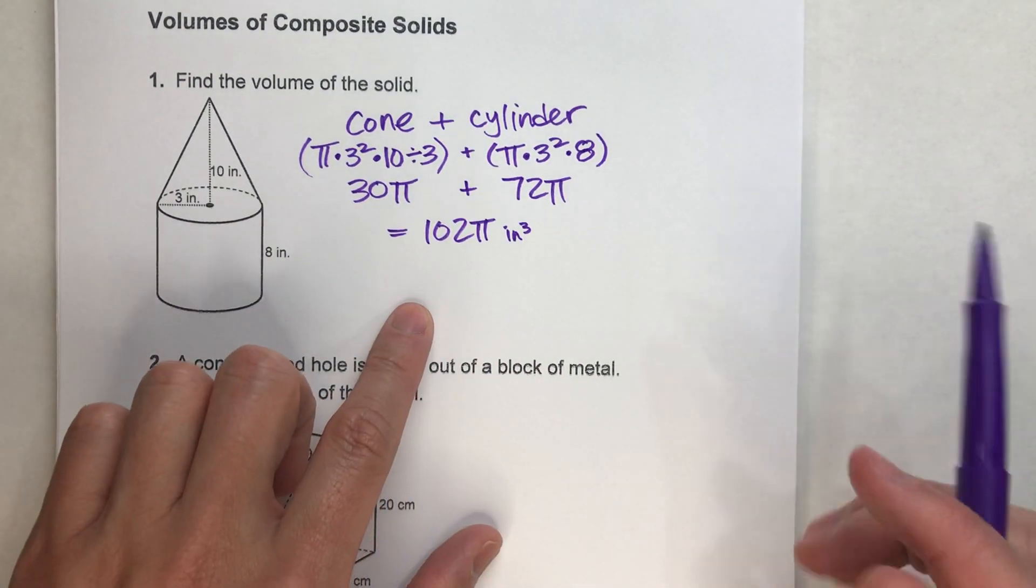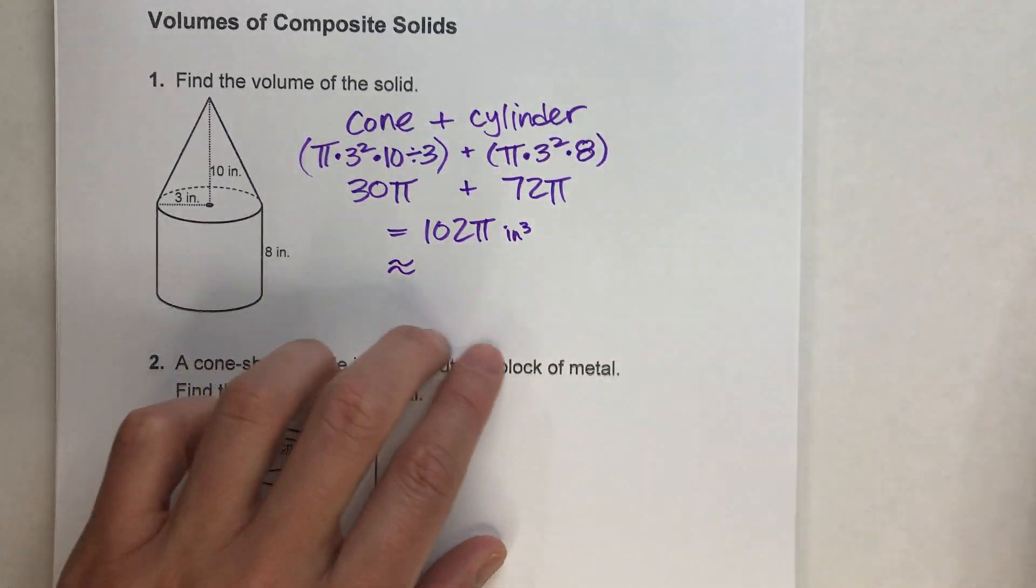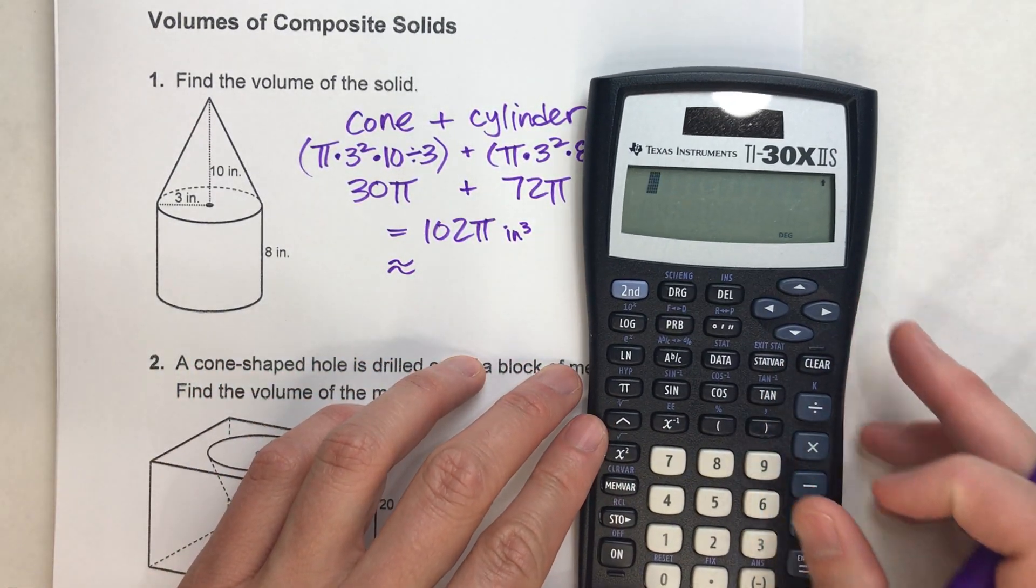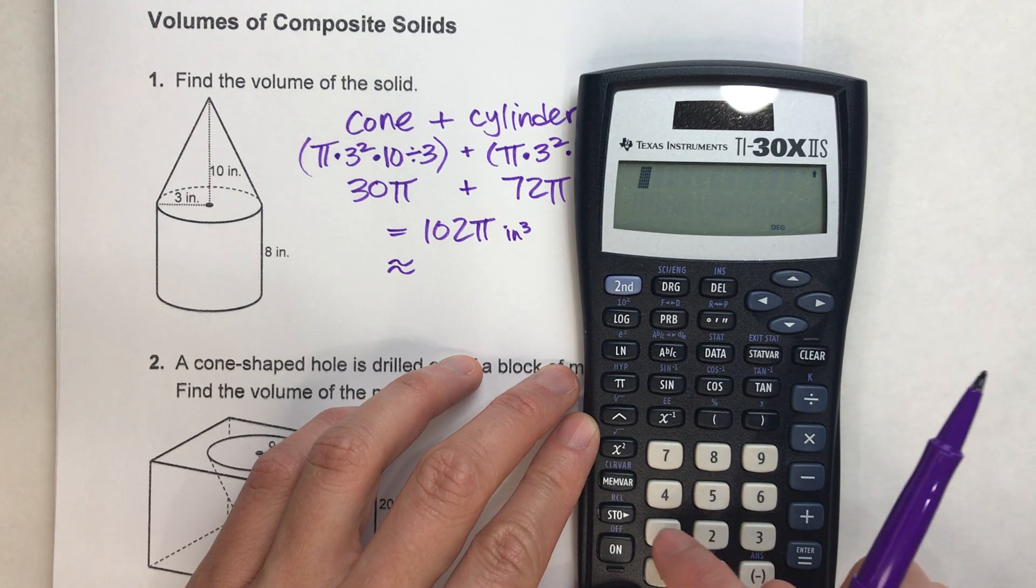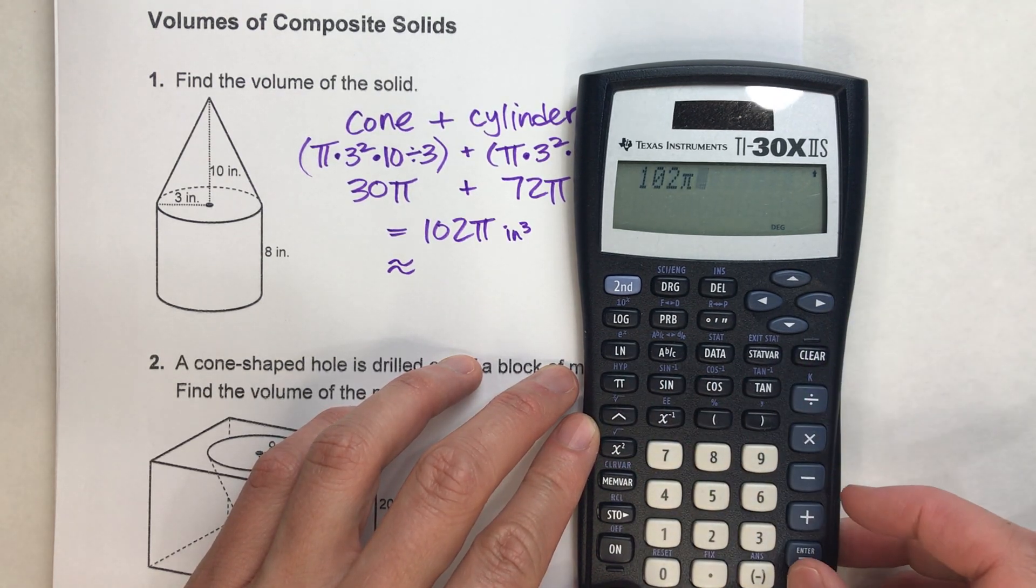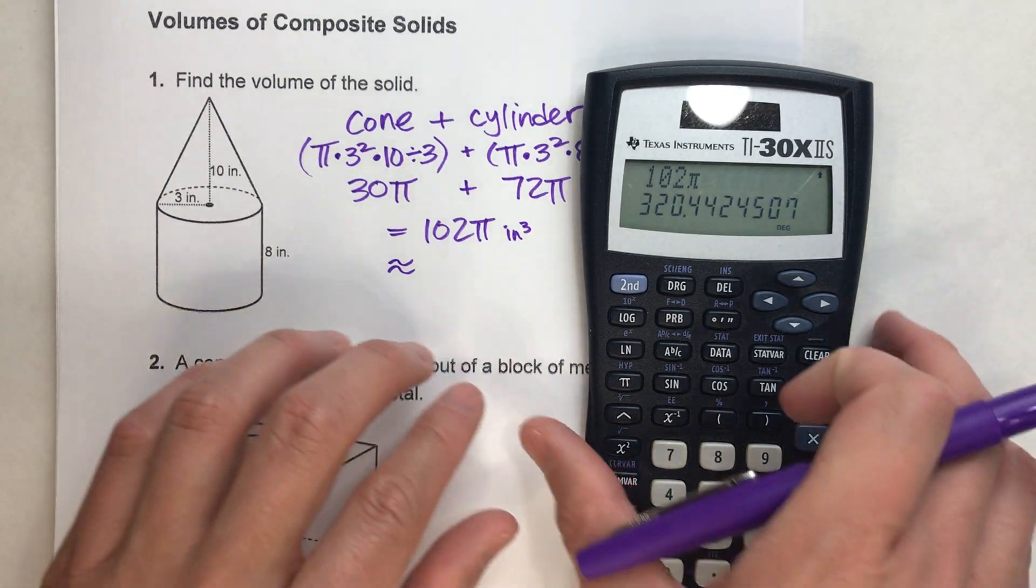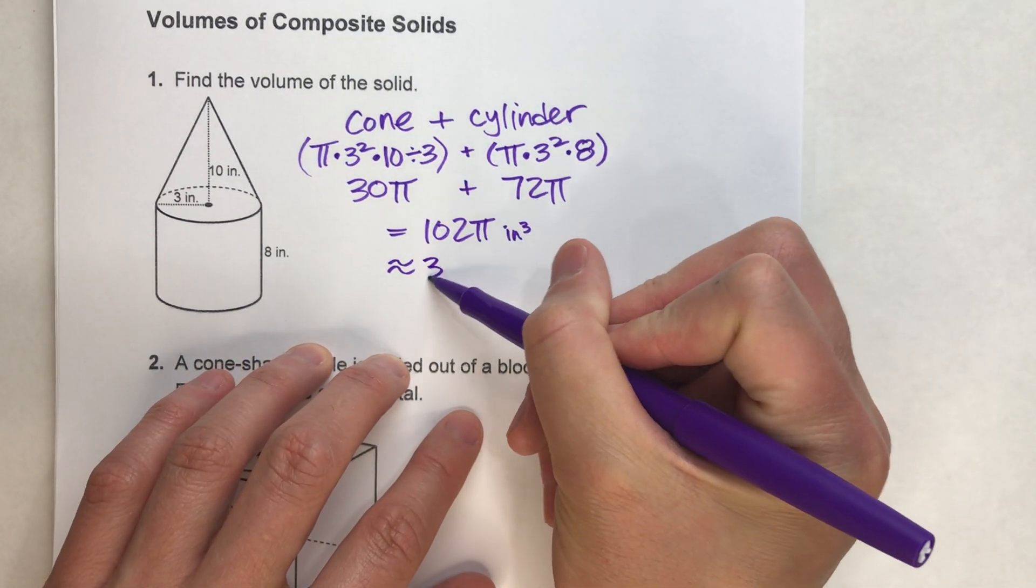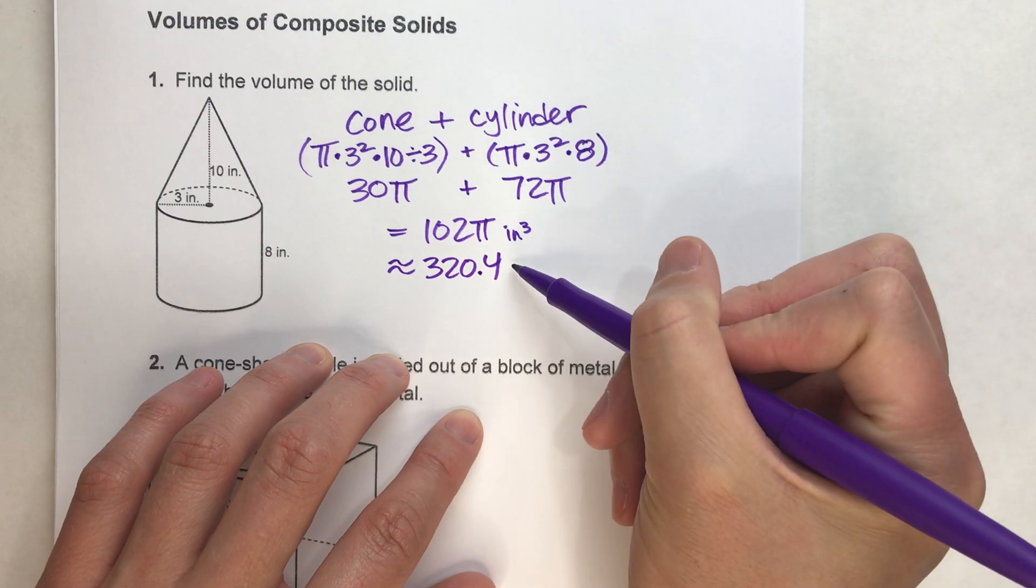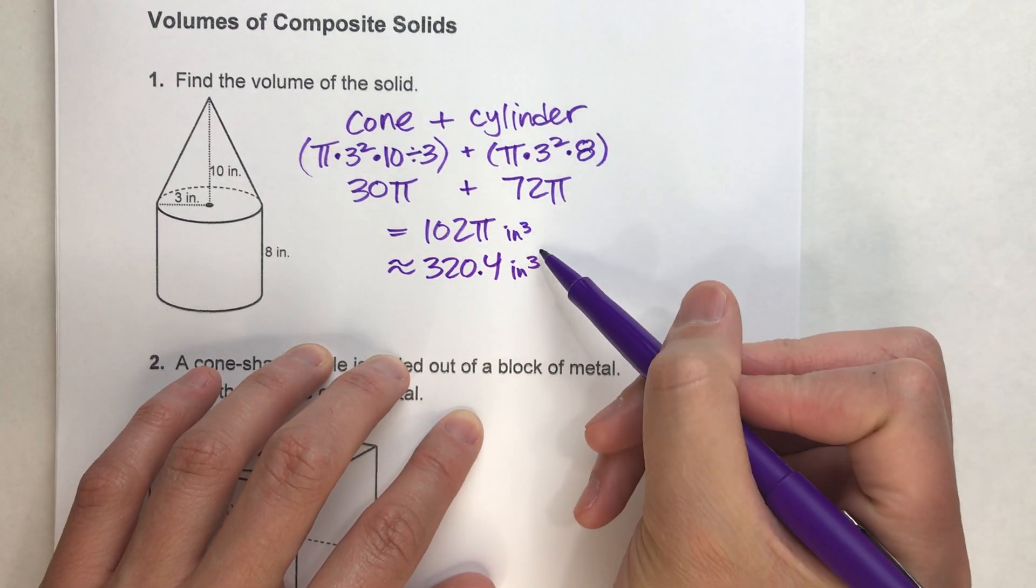But today, we're going to actually put in our calculator and get an approximate answer, rounded to the 10th. So let's do that. 102 times pi gets me about 320.4. So we'll say this is approximately 320.4 inches cubed.